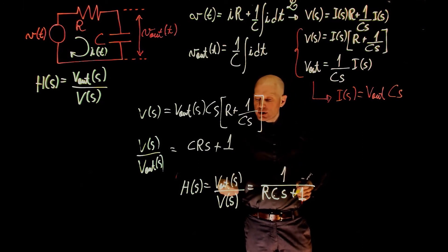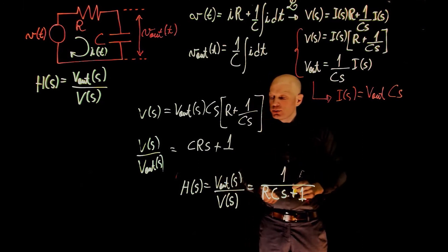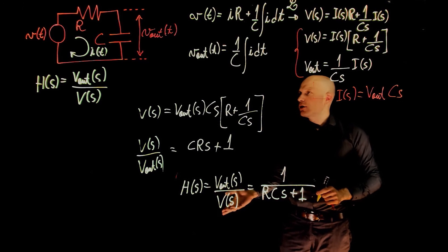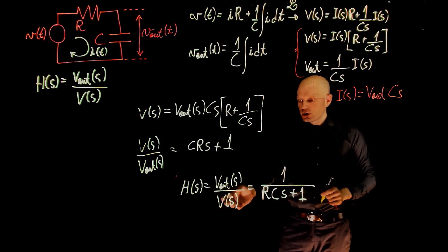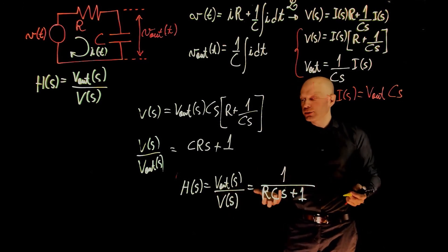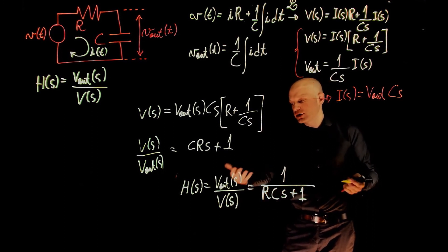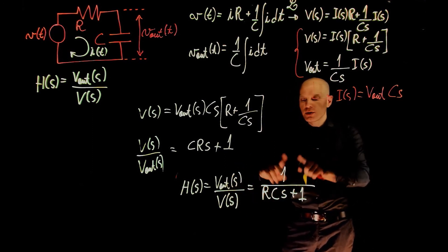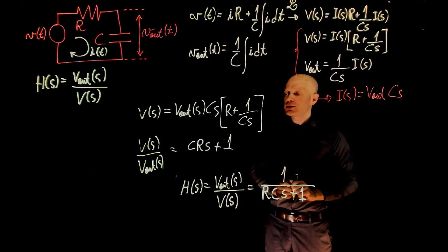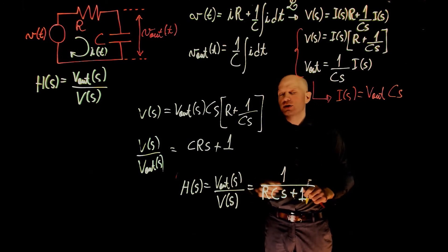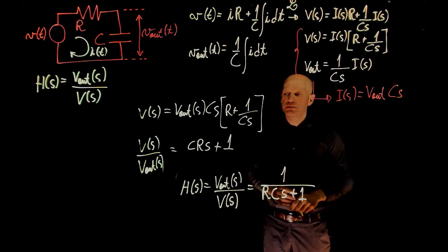If we are now interested in the output V out when we apply a step function to V of s, we simply move V of s to this side of the equation, replace it with the appropriate input — in this case for a step, that would be 1 over s — and find the inverse Laplace to find the temporal response V out for a step input.